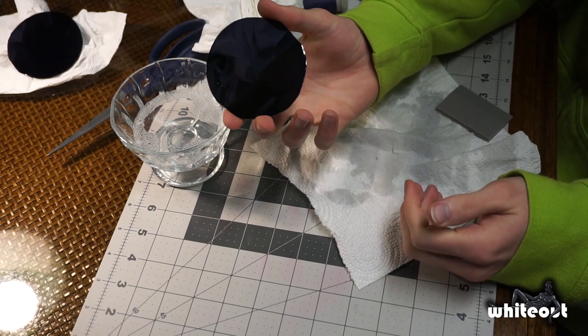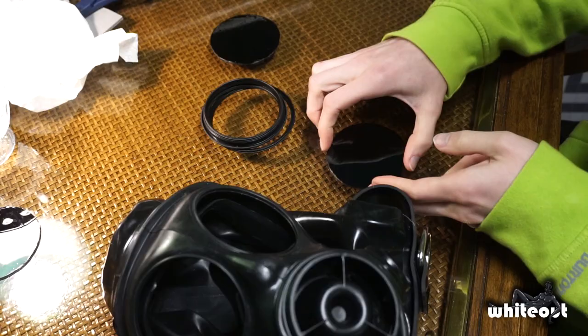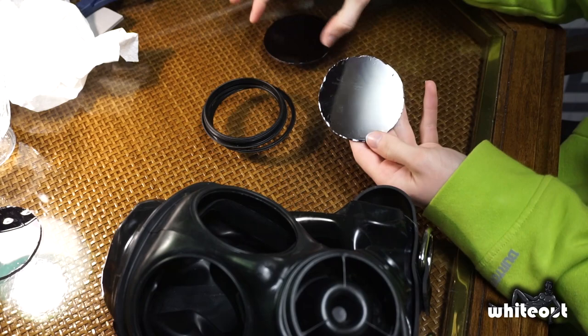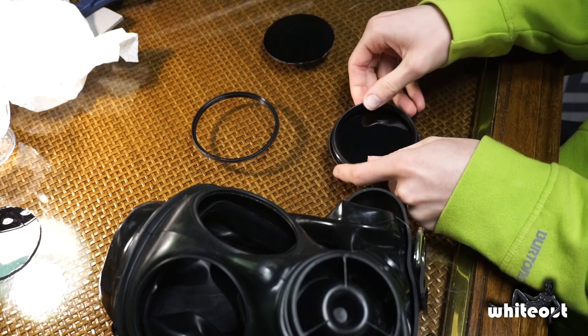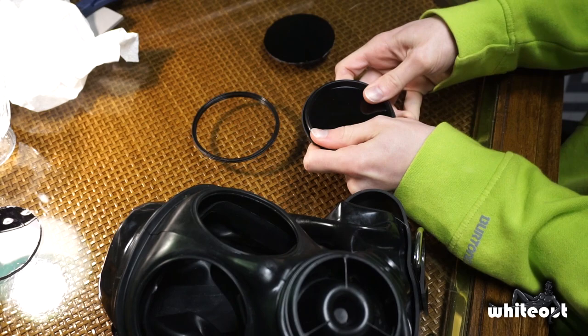All right, so now that our lenses are done, we have to put them back in the gas mask. So first you're going to take this big outer ring, we're going to slip it in right there. And then we got the center ring that just snaps in around that, there we go, so now we have our housing in place, so now we can get that into the gas mask.